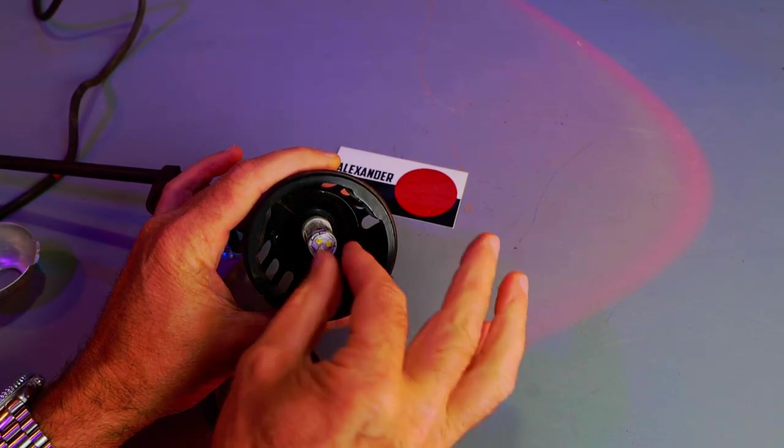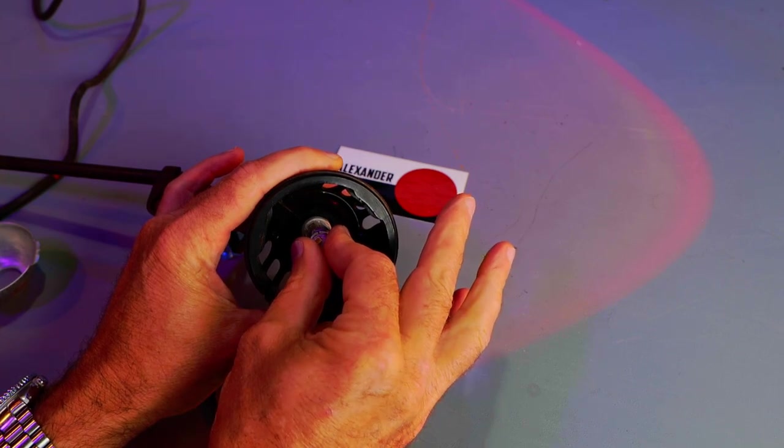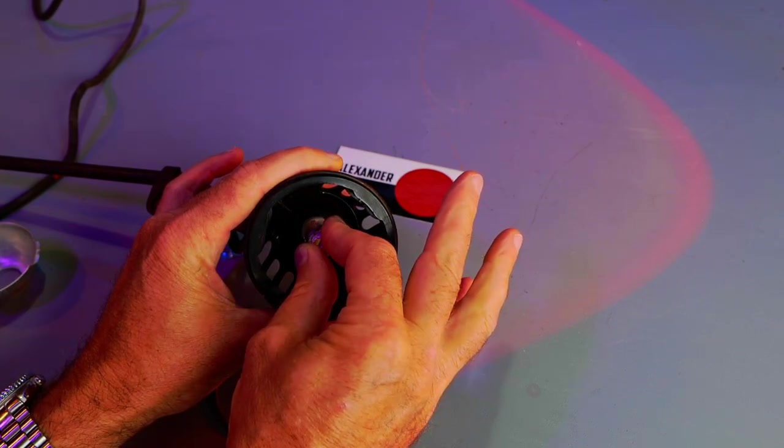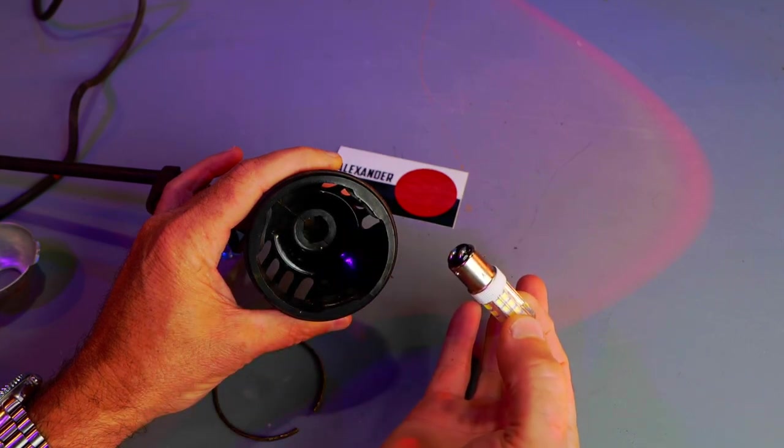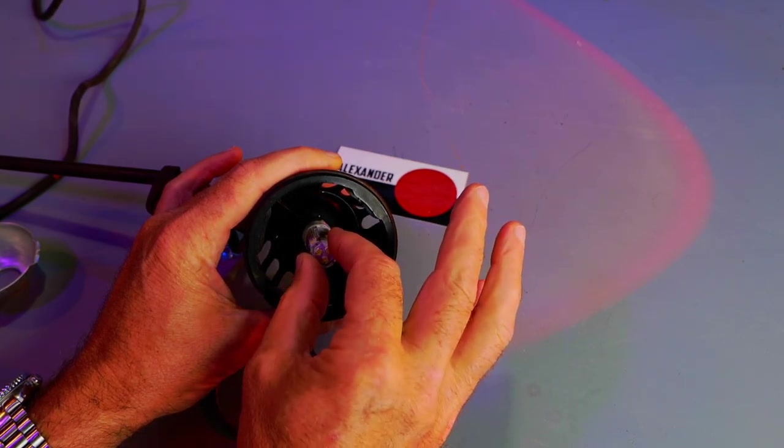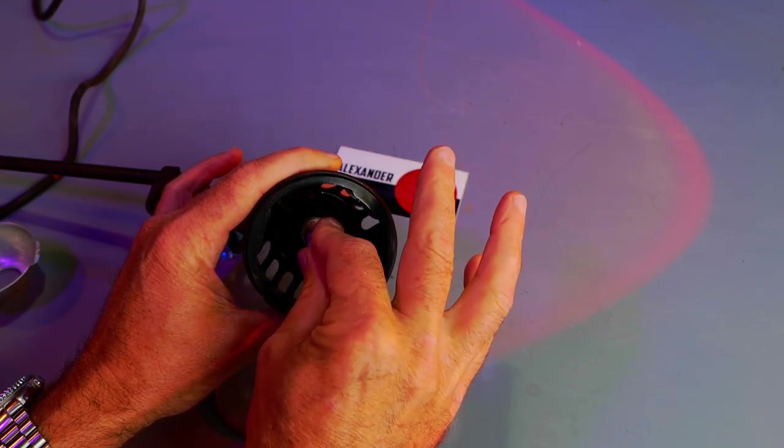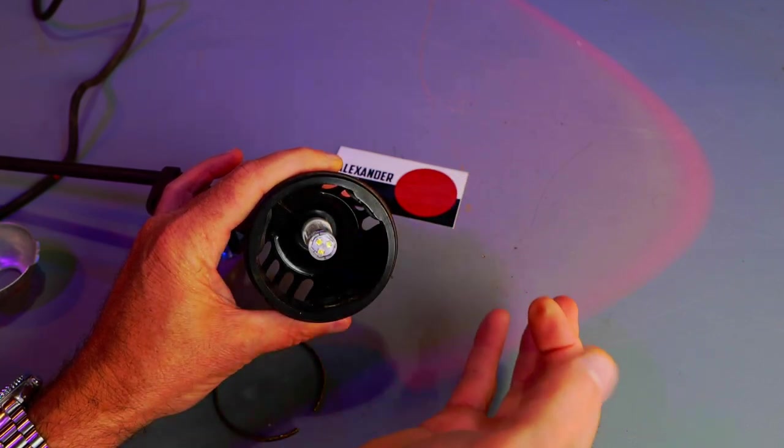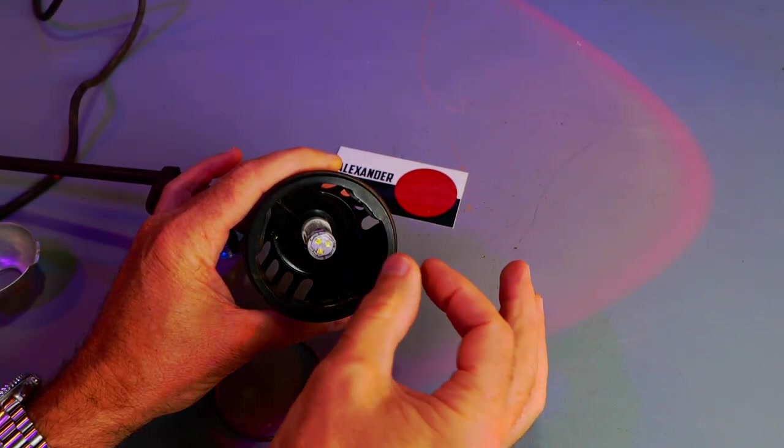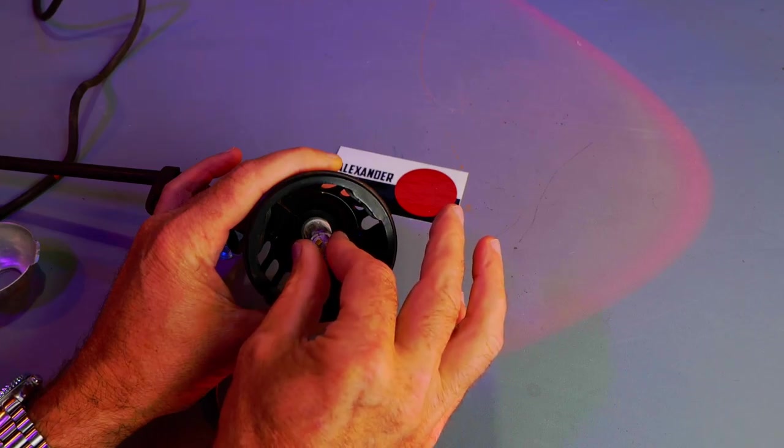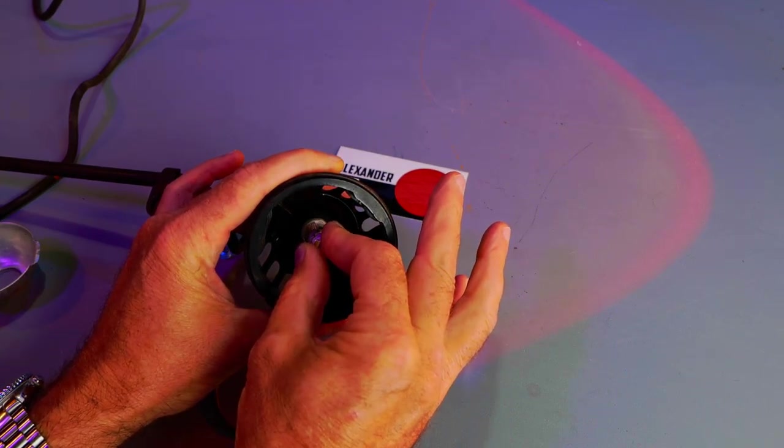And now it's locked into place. To take one out, you push it down against that spring and turn it just a little bit counterclockwise and then it comes out. So to install it, push against the spring clockwise. Now it's locked in. To remove it, down against the spring counterclockwise.